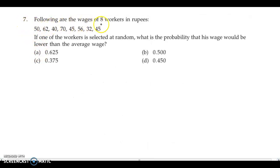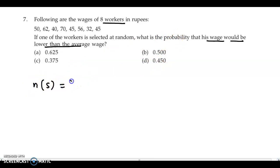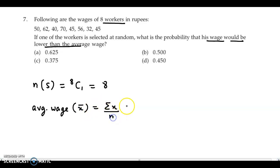Now question 7: Following are the wages of 8 workers in rupees. If one worker is selected at random, what is the probability that his wage is lower than the average wage? Total 8 workers, so n of S is 8. The average wage formula is summation of X upon n. Adding all wages: 50 plus 62 plus 40 plus 70 plus 45 plus 56 plus 32 plus 45 gives a total of 400. Dividing by 8 gives an average wage of 50.